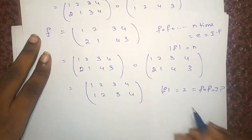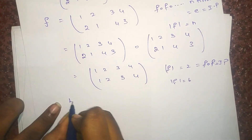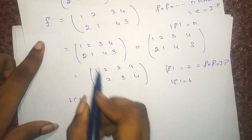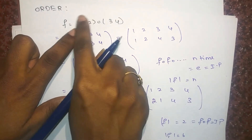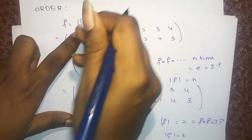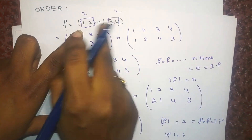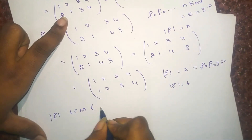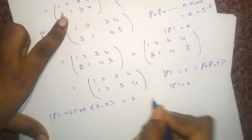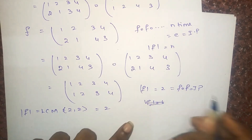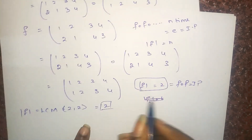What happens if I have the order of F as (6)(7)(8)? We will do a shortcut for this. The order of F is equal to the LCM of cycle lengths — the length of this cycle is 2 and the length of this cycle is 2, so LCM of 2 and 2. The order of F is LCM of 2 and 2, which is 2.